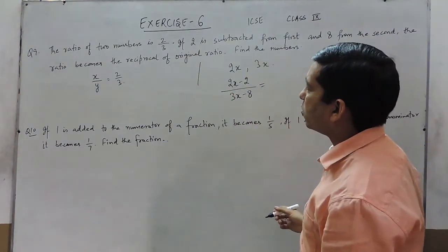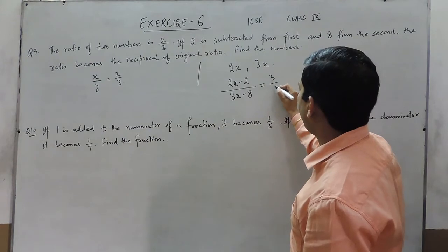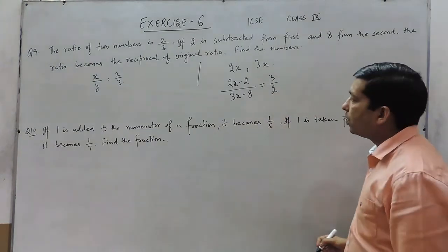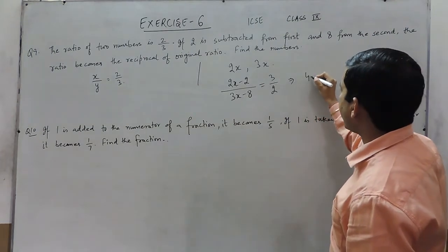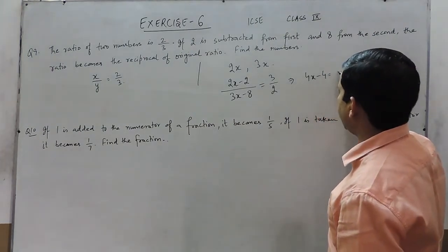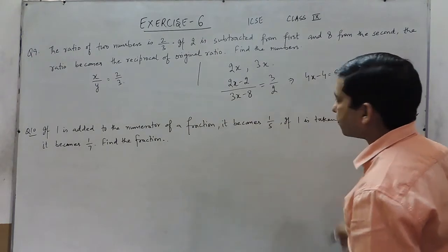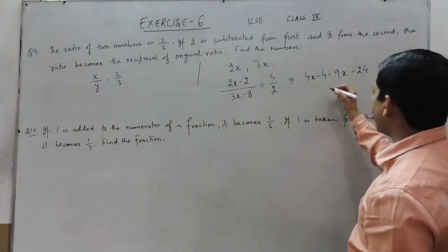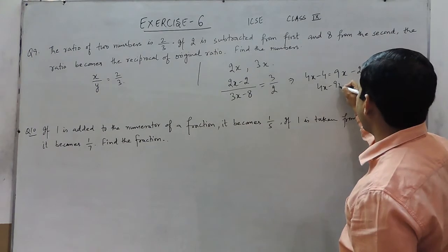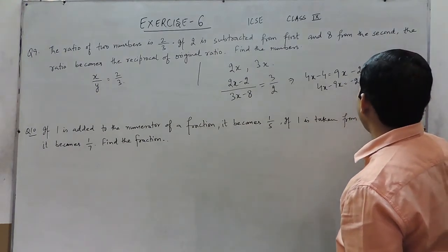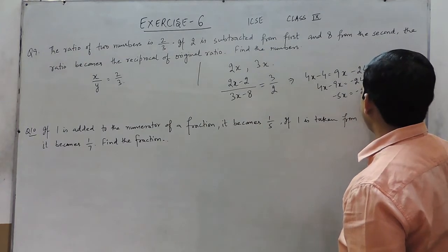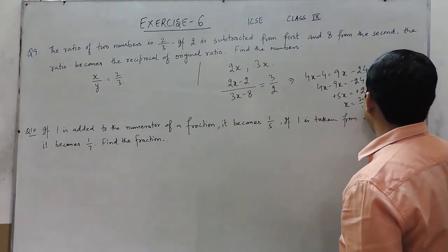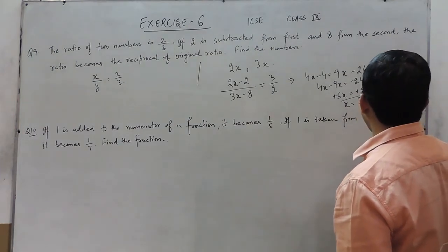The original ratio is 2 is to 3, and the reciprocal of this is 3 is to 2. So if we cross multiply, it becomes 4x minus 4 is equal to 9x minus 24. Taking terms to the left hand side: 4x minus 9x equals minus 24 plus 4, so minus 5x equals minus 20. Therefore x equals 20 upon 5, which gives x equals 4.